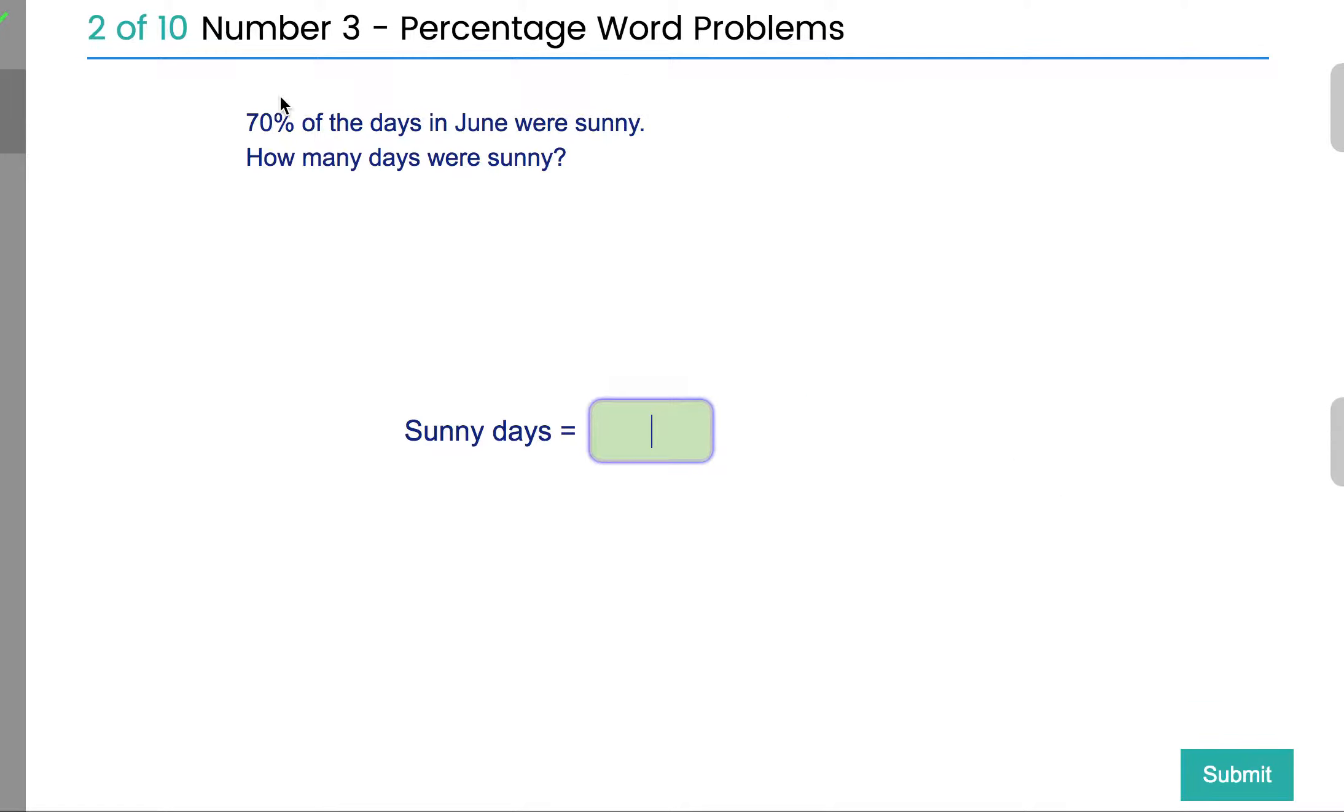Let's look at another one. 70% of the days in June were sunny. How many days were sunny? Let's go back using our 10% rule again. Whenever you're given a percentage problem that you can't figure out, try and work out what 10% would be. So, how many days are within June? There's 30 days in June.